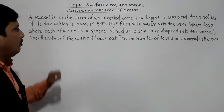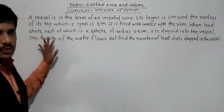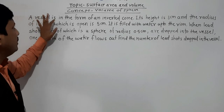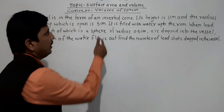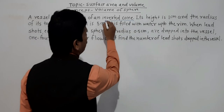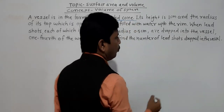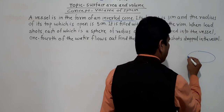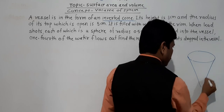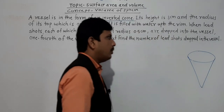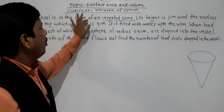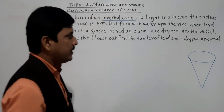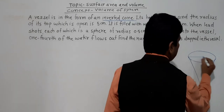According to this question, we will prepare a figure. A vessel is in the form of an inverted cone. If you try to prepare your figure, you will get something like this. Its height is 8 cm — height is given as 8 cm.